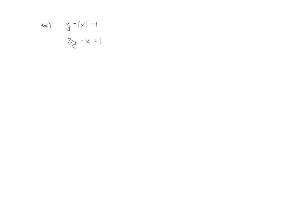The first nonlinear system we're going to look at is on the screen. You still have your basic substitution and elimination methods available. I'll mention the graph of this at the end of working through it. What I would do here is take the y value and substitute it into the second equation. In doing so we get: 2 times the absolute value of x minus 1, minus x, equals 1.